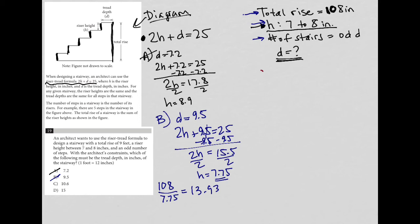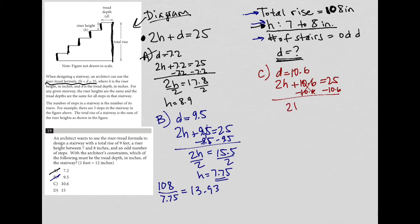Next I'm going to try choice C. C says D is equal to 10.6. Doing the same exact math: 2H plus 10.6 equals 25. Subtracting 10.6 from both sides, 25 minus 10.6 is 14.4. Dividing both sides by 2, H equals 7.2. That's a great H value because it's between 7 and 8.